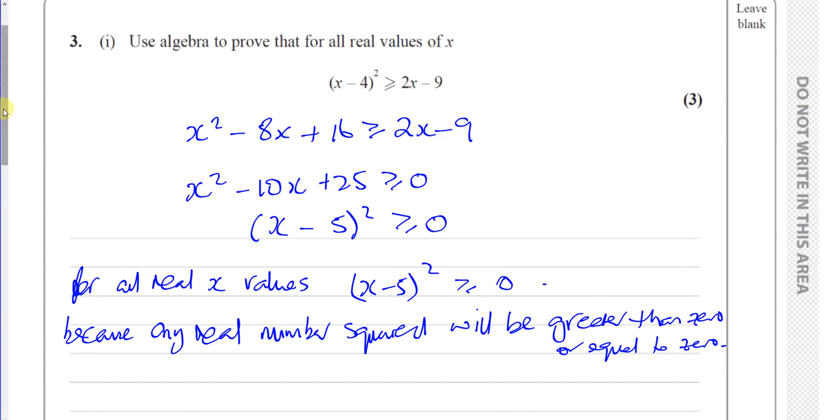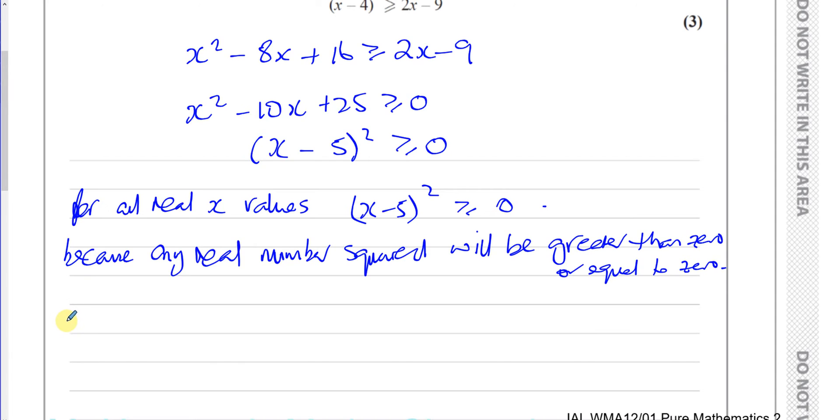So that's basically proved it true. So you should make a little statement at the end. So you can say, therefore, for all real x values, as x minus 5 squared is greater than or equal to 0, then it follows on that the original statement, which is x minus 4 squared, must be greater than or equal to 2x minus 9. Because this statement followed on logically and algebraically from this statement, if this is true, this must also be true.